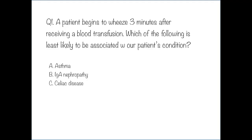Question number one. A patient begins to wheeze three minutes after receiving a blood transfusion. Which of the following is least likely to be associated with our patient's condition? Option A: asthma. Option B: IgA nephropathy. Option C: celiac disease. The answer to this question is IgA nephropathy.